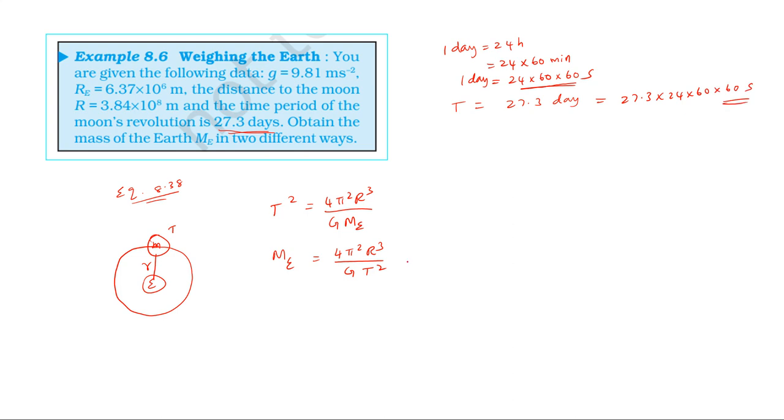Now substitute the values: 4π² where π is 3.14 all squared, times the distance cubed, divided by the universal constant and time period squared. [Calculating numerical values step by step] So, this is the answer.